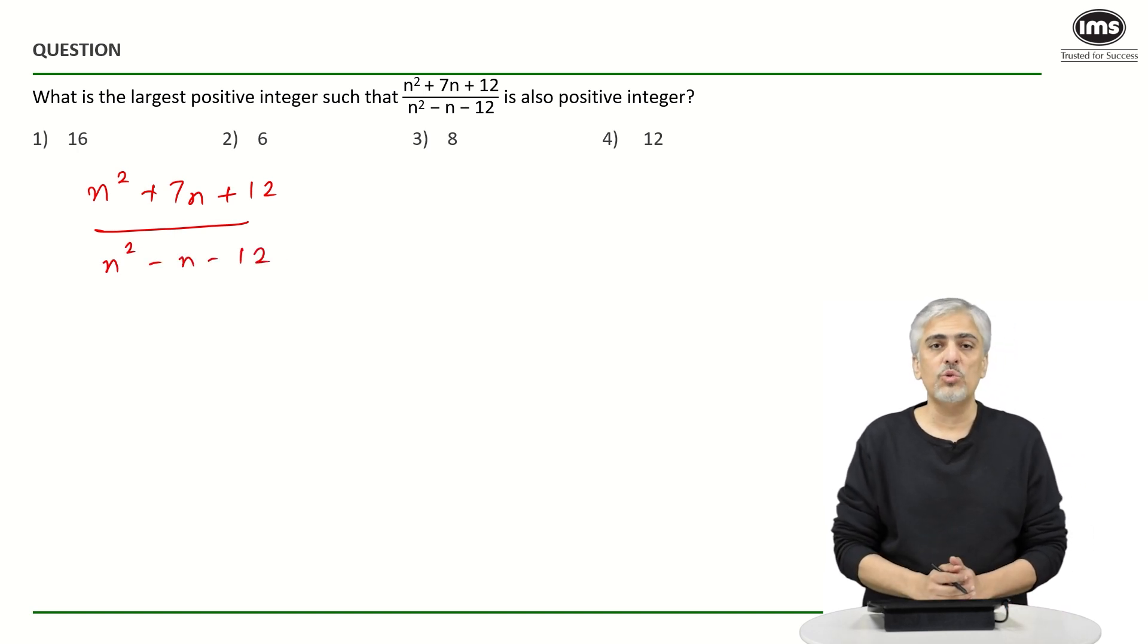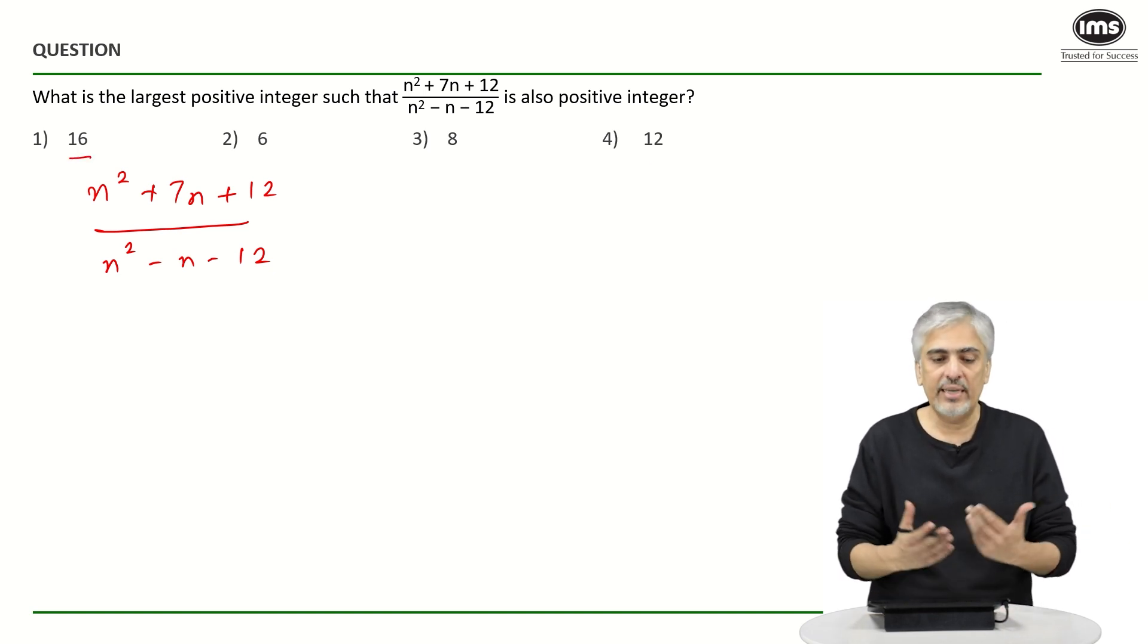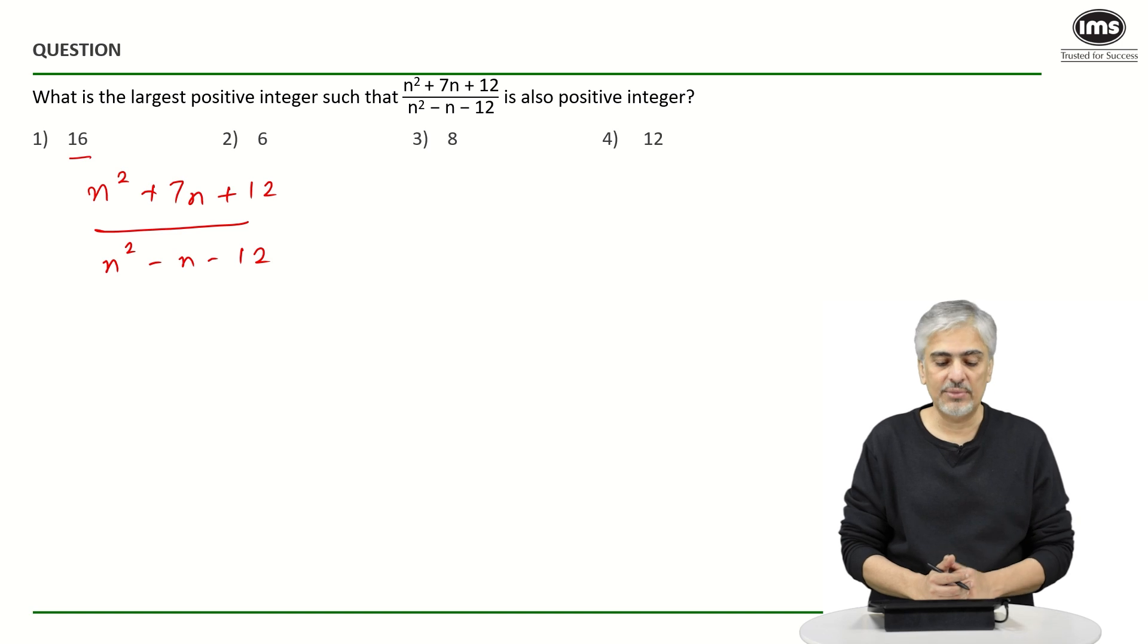Now I know a lot of students what they've done when this question was asked in CAT is because the calculator was available, they went and checked each and every option. Because they asked for largest, they first checked 16, then 12 and 8 and so on, and then got the answer. What would be the right approach to that? Obviously that is possible, you could do that in the exam, but you will be wasting some time.